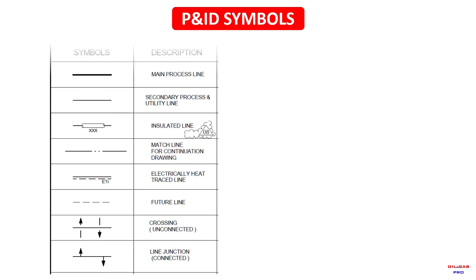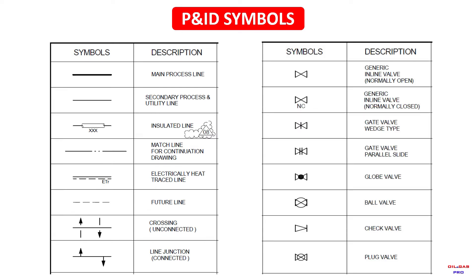Some examples of P&ID symbols: main process line, secondary process line, insulated line, match line for continuation drawing, electrically heat traced line, feature line, passing line junction.